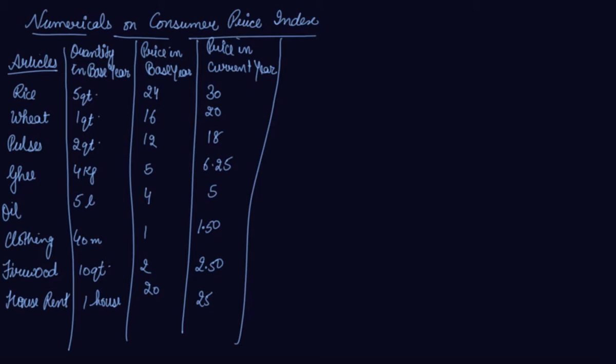In this video we will be doing the numerical on consumer price index. We have learnt two methods: the first was the aggregative expenditure method and the other was the family budget method. We will be solving this question from both methods. Let's first take the aggregative expenditure method.